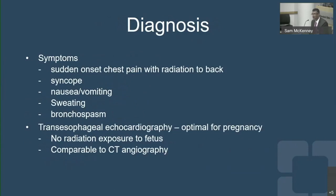Symptoms and diagnosis are similar, though diagnosis can sometimes be delayed due to overlap with normal pregnancy symptoms. Severe onset of chest pain with radiation to the back should prompt consideration, especially if risk factors are present. Diagnosis is typically made with echocardiography, and a transesophageal approach is optimal in pregnancy. Results are comparable to CT angiography but without radiation exposure to the fetus.